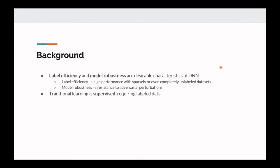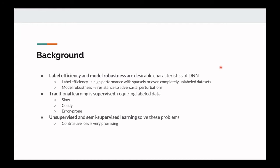Traditional learning is supervised and requires labeled data. A lot of the techniques we've been talking about all semester are supervised techniques. There are some problems with this — all this labeling is generally done by hand, which can be slow, costly, and error prone. So there's great incentive to approach these problems in an unsupervised or semi-supervised way. The contrastive loss we'll be talking about is very promising for this.